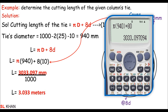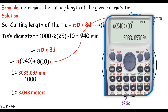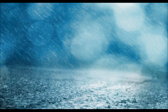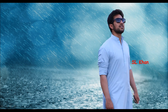Dividing by 1000, the cutting length of the circular tie is 3.033 meters. That's it — this is how we determine the cutting length of a circular tie. If you liked this video, please thumbs up and subscribe. Thank you for watching, see you next time.